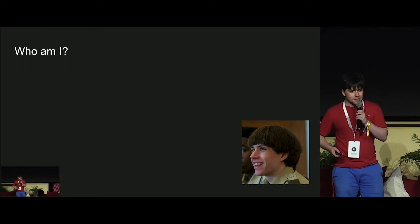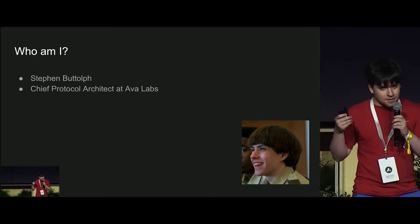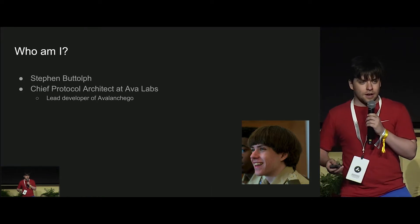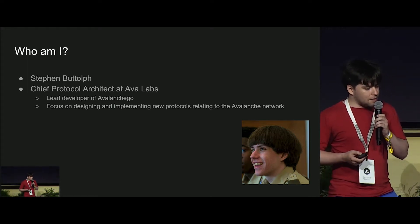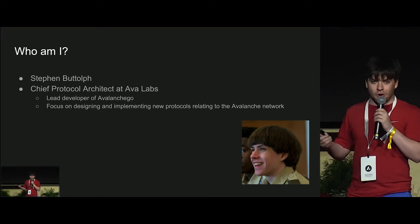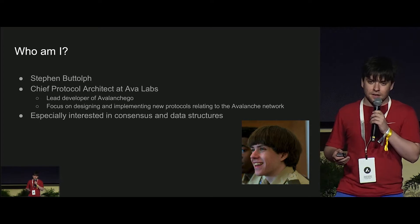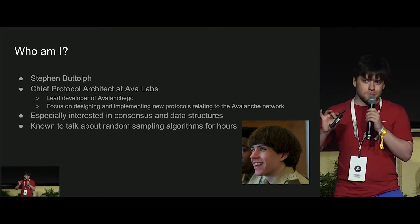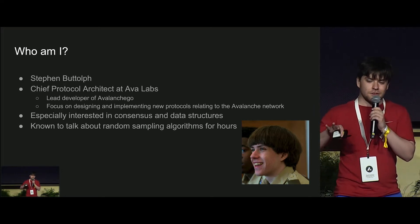I should probably reintroduce myself. My name is Steven Budolph. My title is Chief Protocol Architect at Ava Labs, which is very amorphous, at least to me. What that really means is that I'm the lead developer of Avalanche Go, which actually means I barely code anymore and I just do PR review. In my free time I focus on designing new protocols — that's where the protocol architect part comes in. My primary interest is really consensus and data structures. I'm also known to talk about random sampling for hours, so feel free to ask me afterwards.